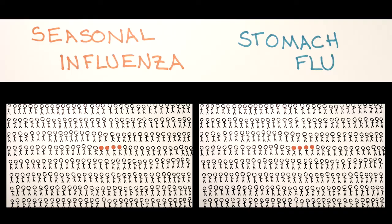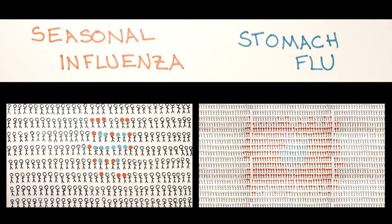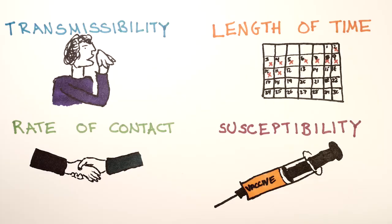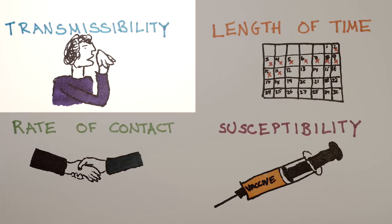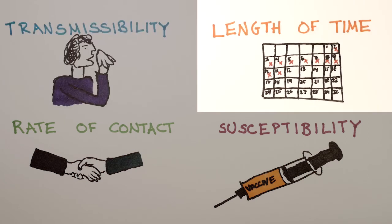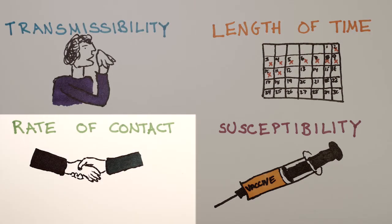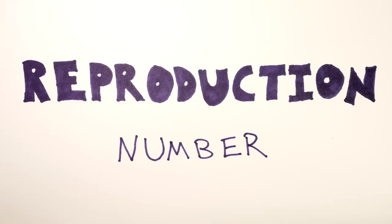How do you think norovirus might be different from influenza? Which of the factors that we discussed are likely to be different? Transmissibility? Length of infectiousness? Rate of contact? Every disease has a different R-number, depending on these factors.